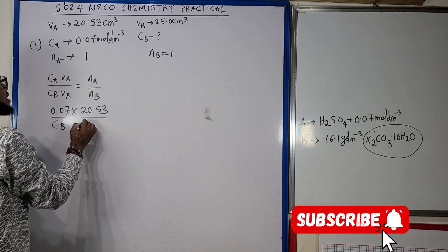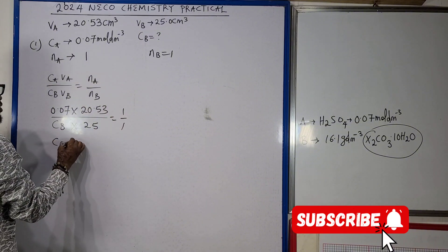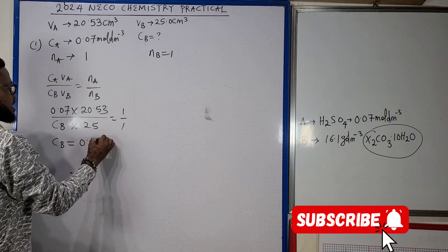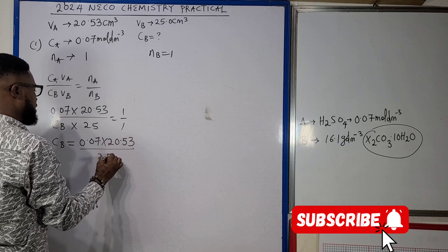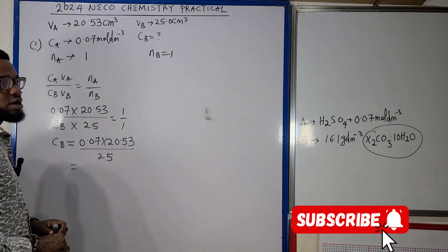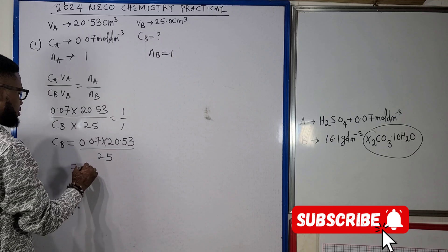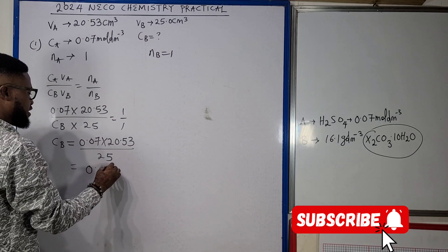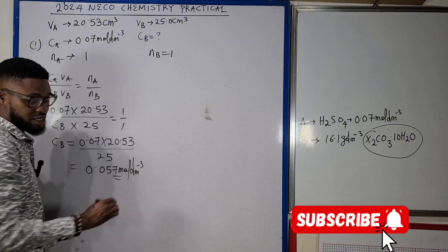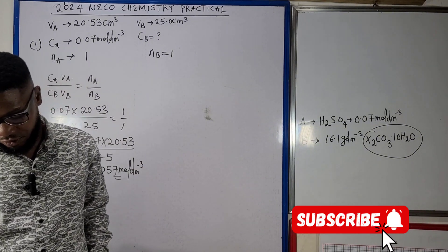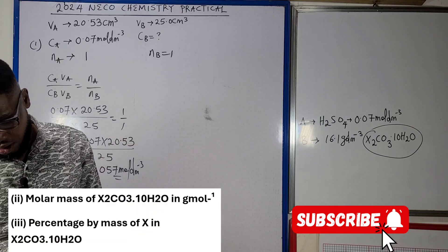CA here is 0.07 times VA is 20.53 divided by CB, which is what we are looking for, times VB is 25 equals to 1 over 1. So CB here will mean 0.07 times 20.53 divided by 25. If we compute this we are going to get 0.057 mole per dm³.